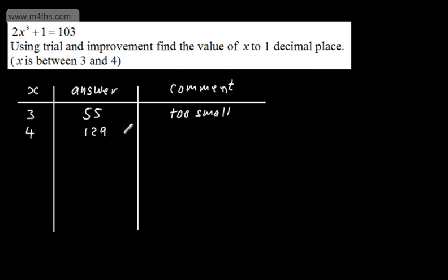So we've got 129, and we can say that that is too big. So from this we can see that the answer is now between 3 and 4. We can see that it's going to be closer to 4 than it is 3.